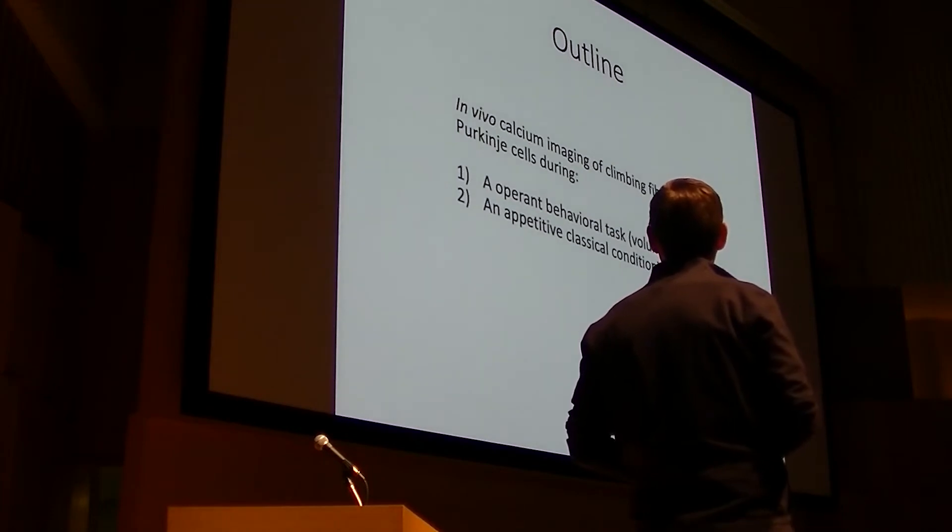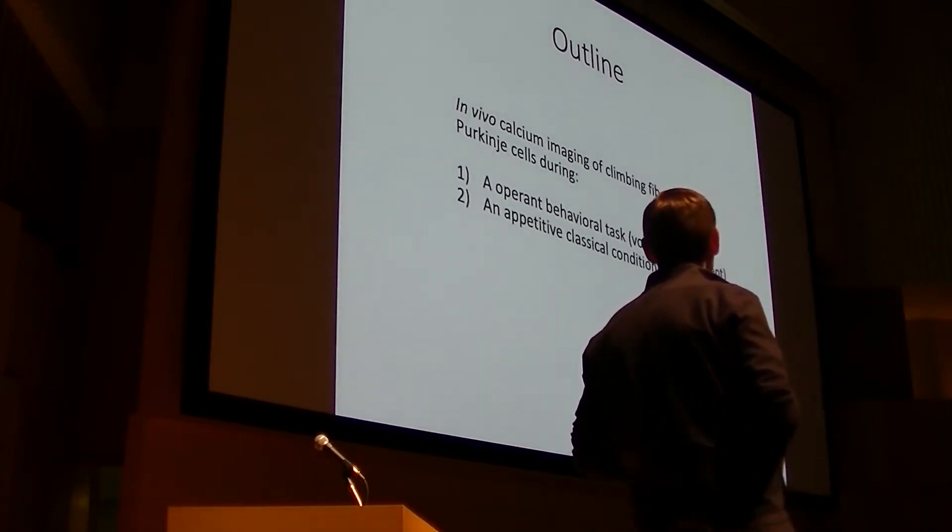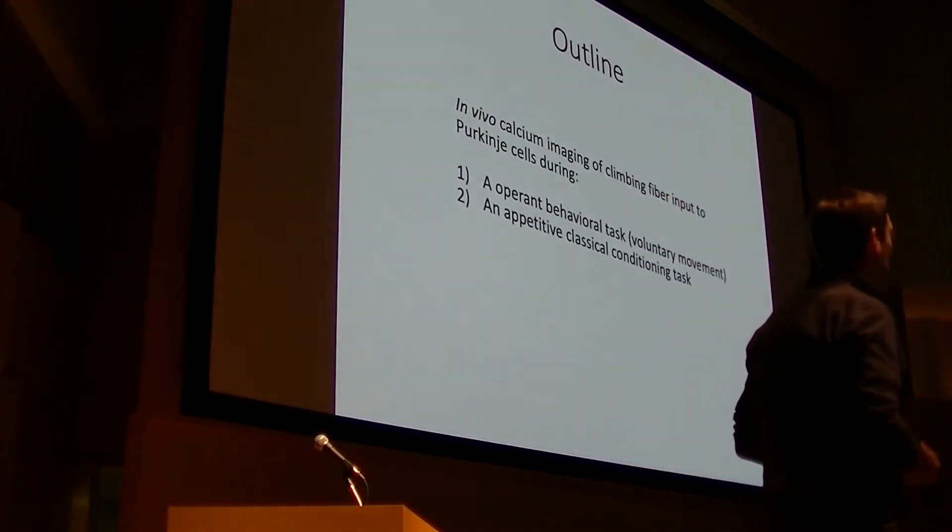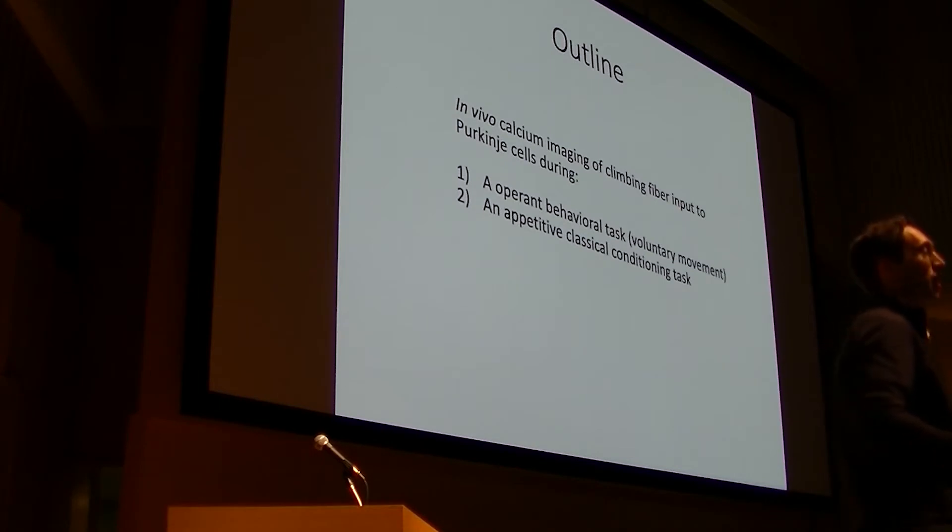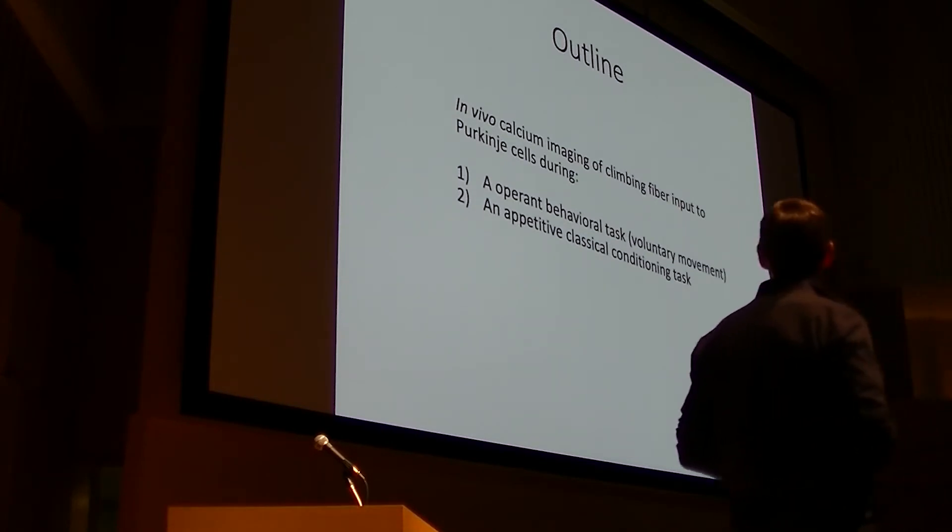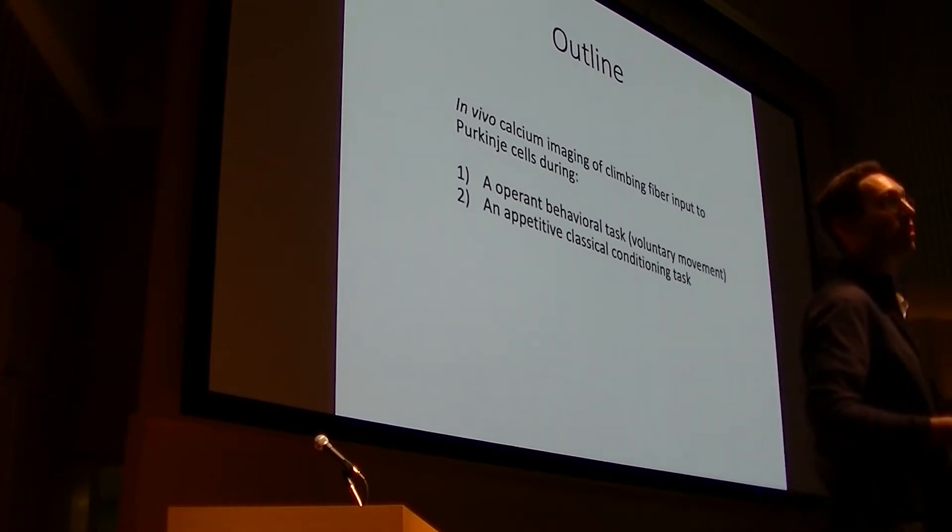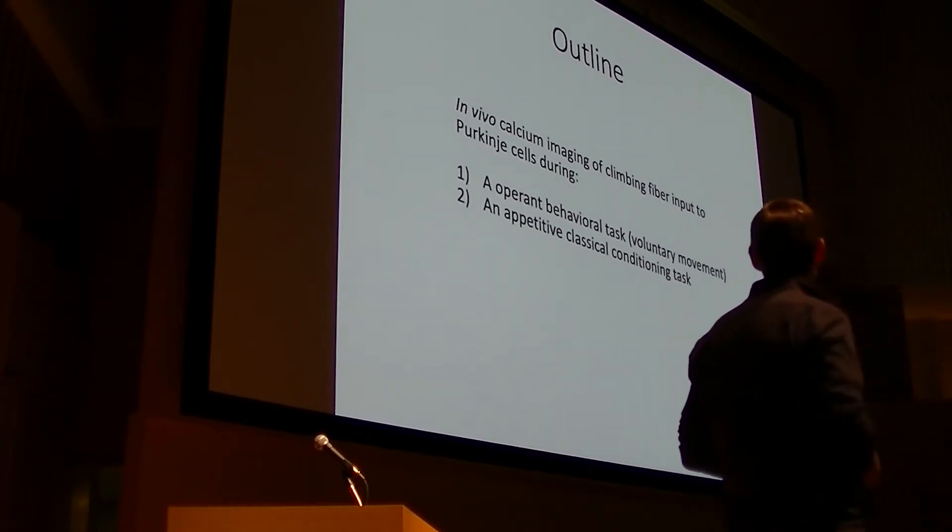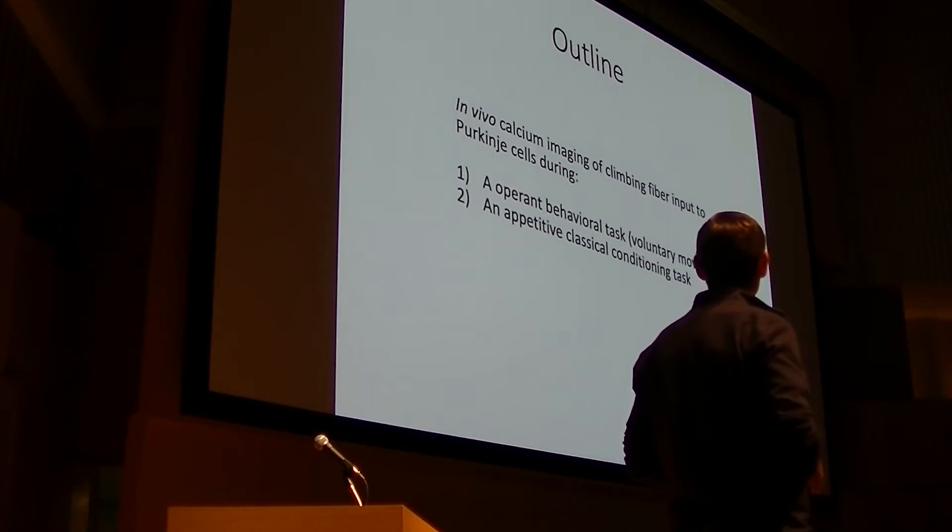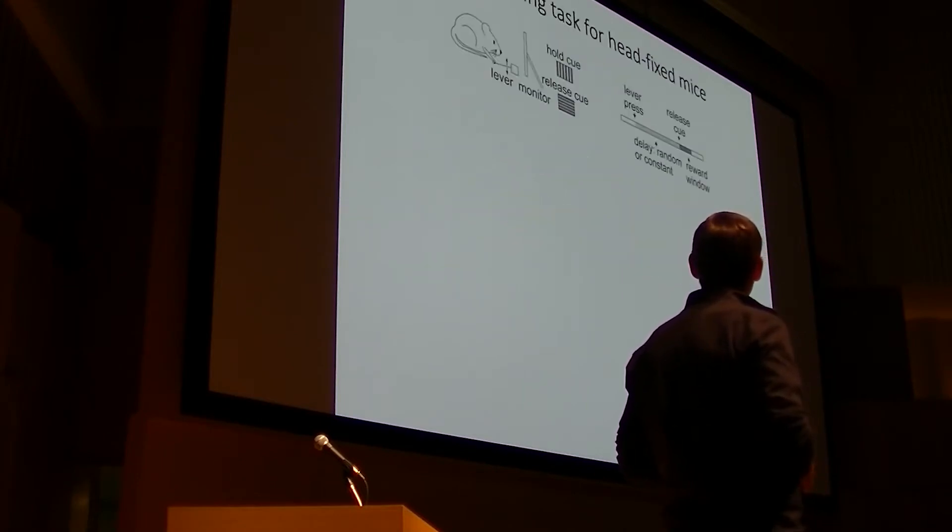Today I'm going to show you data where we're using deep two-photon calcium imaging of climbing fiber input to Purkinje cells in the context of two different tasks. The first of which is an operant task in which mice are trained to execute a voluntary forelimb movement, and the second of which is a Pavlovian classical conditioning task.